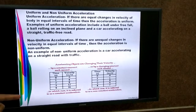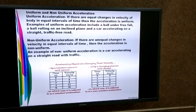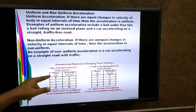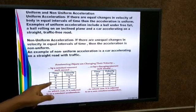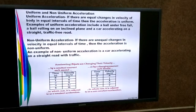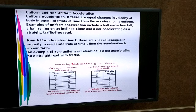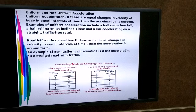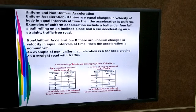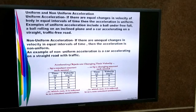The velocity is measured after equal intervals of 1 second. The difference between consecutive velocities: 4 minus 0 = 4, 8 minus 4 = 4, 12 minus 8 = 4, and 16 minus 12 = 4. The velocity changes by equal amounts in equal intervals of time. Whenever there are equal changes in velocity in equal intervals of time, acceleration is uniform.